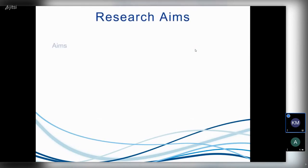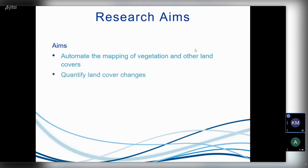Our aims in this study were firstly to map the urban land cover and the vegetation cover using machine learning algorithms, and then to quantify those land cover changes — where have there been changes, and what these changes are. So what has changed to what?